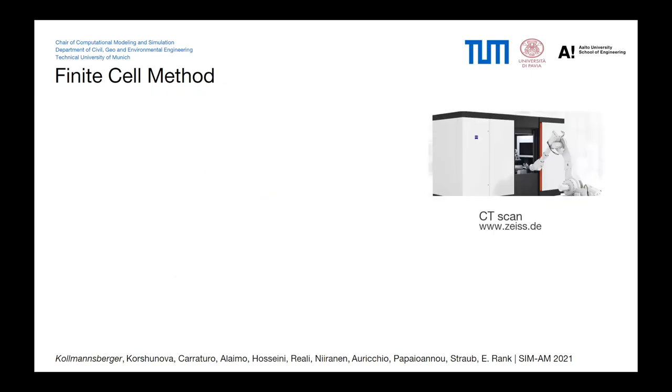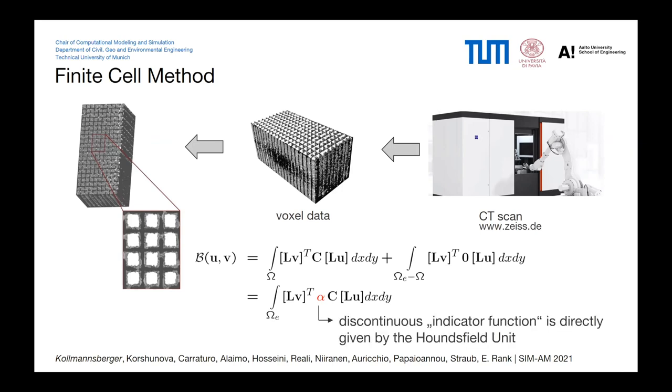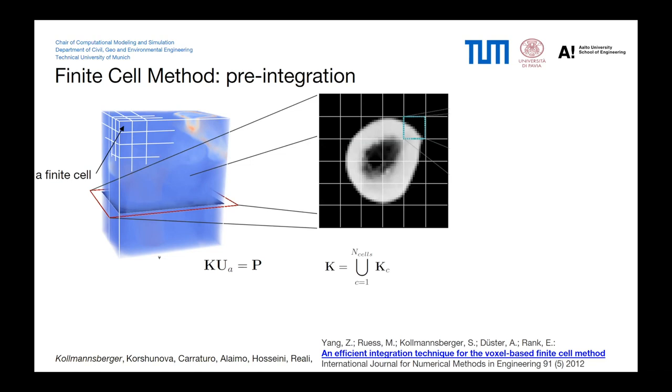If you go to do finite cell analysis on CT scans, things simplify because you have from the CT scans voxel data. This discontinuous indicator function alpha is directly given by the Hounsfield units that you get from the CT scans. So you get the geometry directly from the CT scans, and you don't need to mesh. The further advantages, since everything is so regular, you can apply pre-integration technique that is also often used in topology optimization. So you start with a CT scan, you make your grid that we call finite cells.